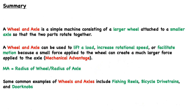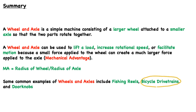To summarize: a wheel and axle consists of two components — a larger wheel attached to a smaller axle so that the two parts rotate together. It can be used to lift a load, increase rotational speed, or facilitate motion, because a small force applied to the wheel creates a much larger force at the axle. The mechanical advantage equals the radius of the wheel divided by the radius of the axle. Common examples include fishing reels, bicycle drive trains, and doorknobs.